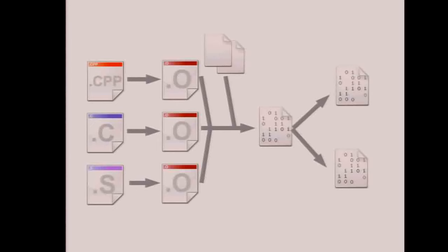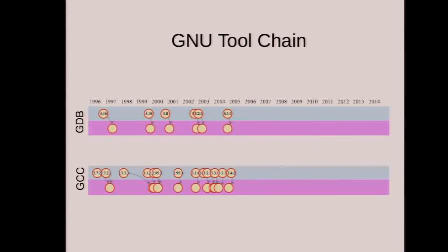In FreeBSD, from the beginning we were using the GNU toolchain — GCC, binutils, GDB. The GNU folks would release new versions on a regular basis and we would bring those versions into FreeBSD. The light blue bar represents release dates from GCC and GDB, and the magenta bar below represents the point at which we imported it into FreeBSD. For the most part, within a month or a little bit longer, we would import a new version, tracking most upstream releases.